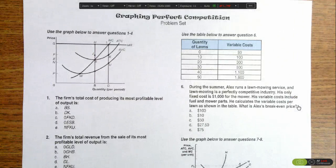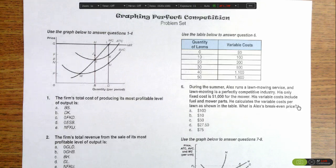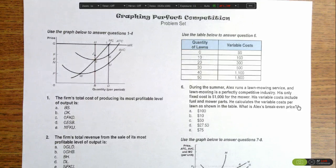This question is asking us to identify the firm's total cost of producing its most profitable level of output. So the first thing we need to remember is that the most profitable level of output is found where marginal revenue equals marginal cost, and that will tell us our quantity.